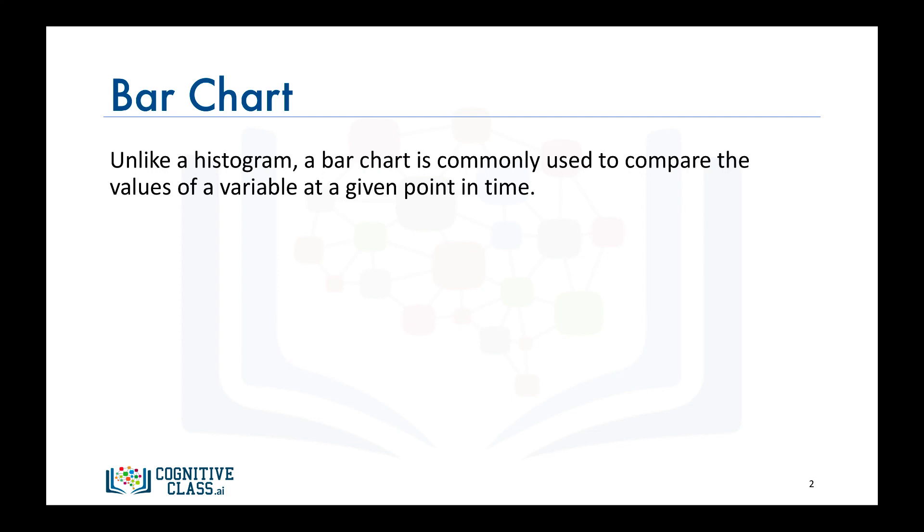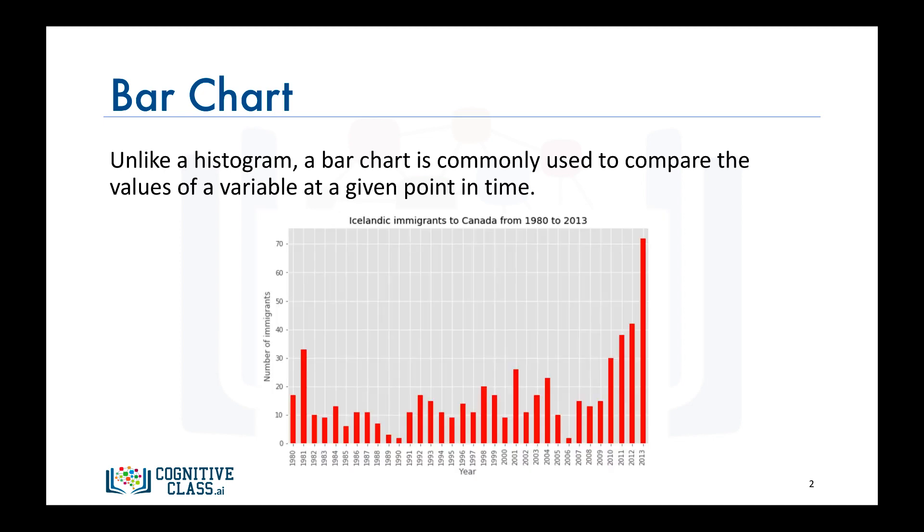For example, say we're interested in visualizing in a discrete fashion how immigration from Iceland to Canada looked like from 1980 to 2013. One way to do that is by building a bar chart where the height of the bar represents the total immigration from Iceland to Canada in a particular year. So how do we do that with matplotlib?